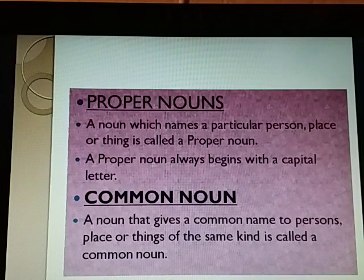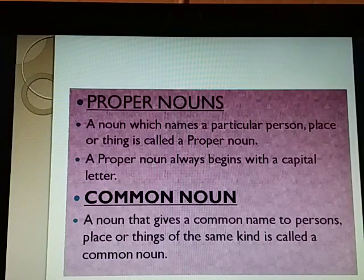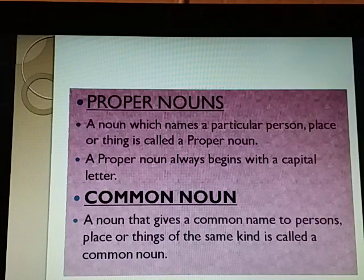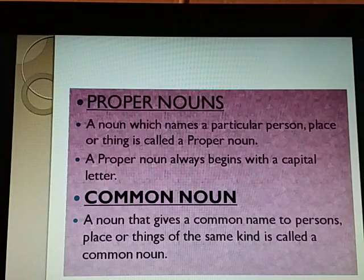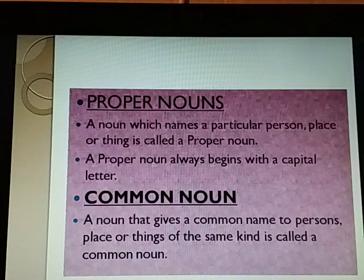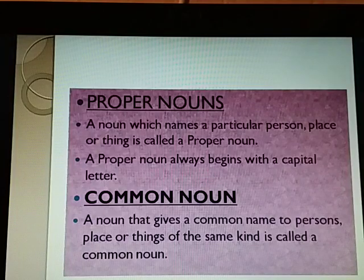Now, common nouns. A noun that gives a common name to persons, places, or things of the same kind is called a common noun. The words book, pen, river, mountain, train, bird, animal, and city are all common nouns. Ganga, Yamuna, Mahanadi, and Gomati are the names of rivers — the word 'river' is a common noun shared by all four. But 'Ganga' is the name of a particular river, so it is a proper noun. Similarly, Yamuna, Mahanadi, and Gomati are also proper nouns.